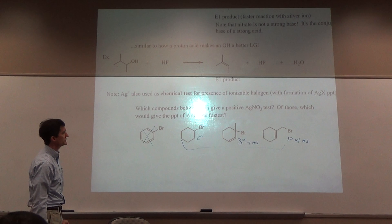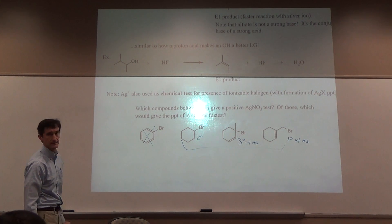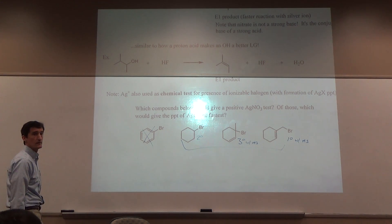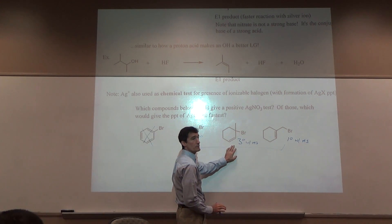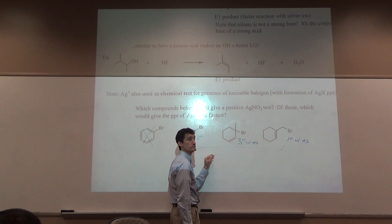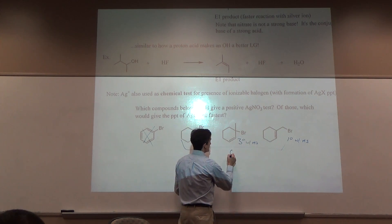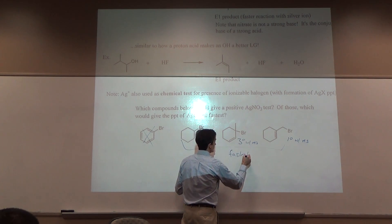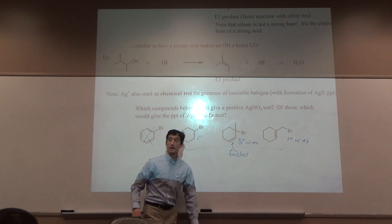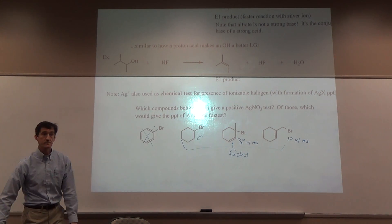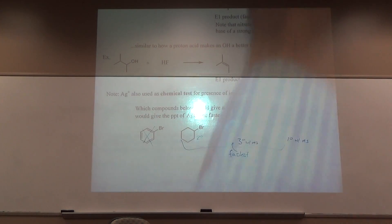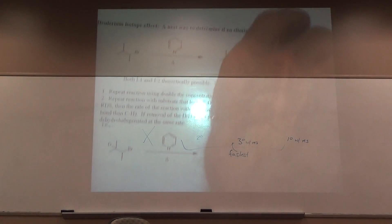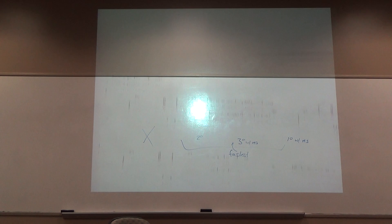Which would give the precipitate of silver bromide the fastest? Tertiary. Tertiary with resonance. Fastest. That's going to be the easiest cation to form.